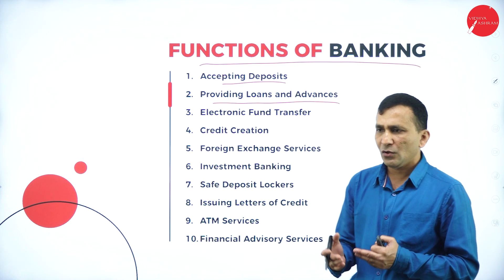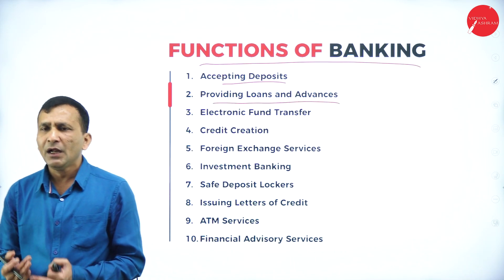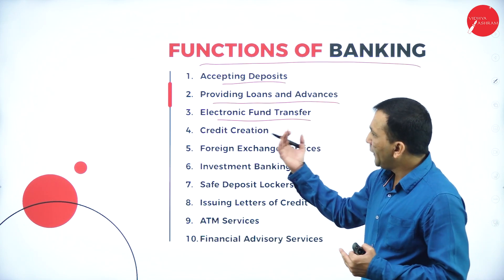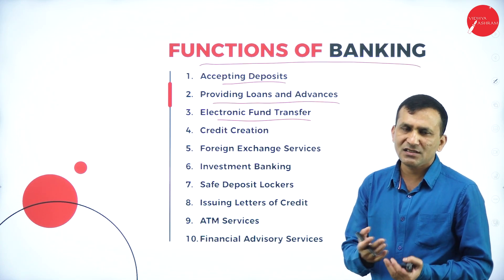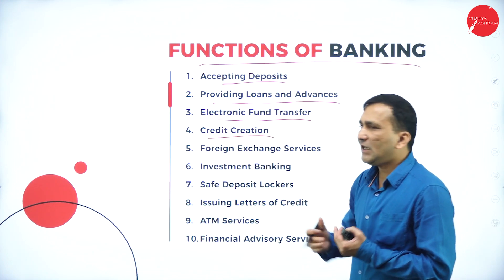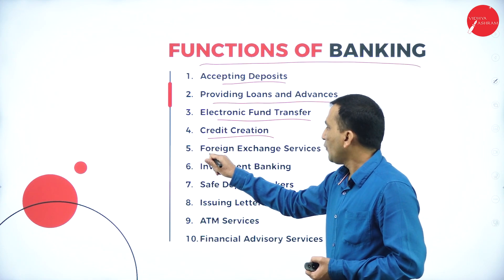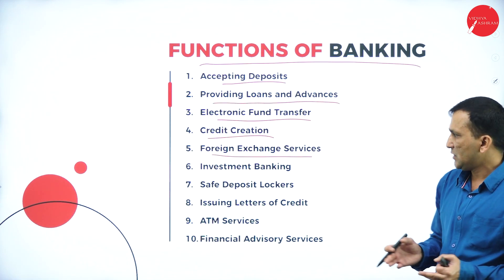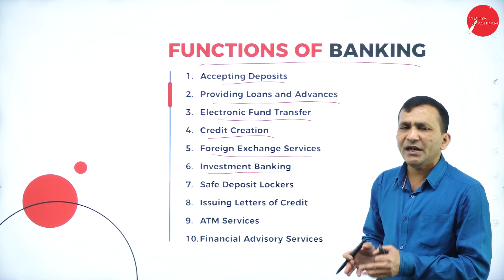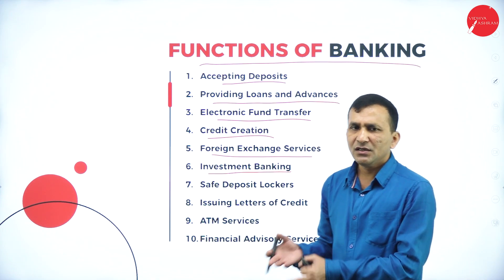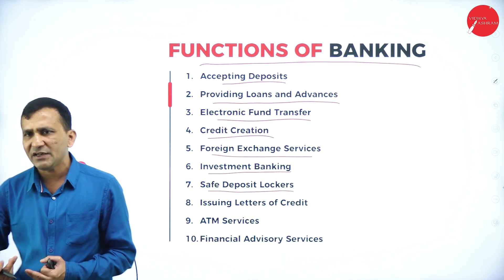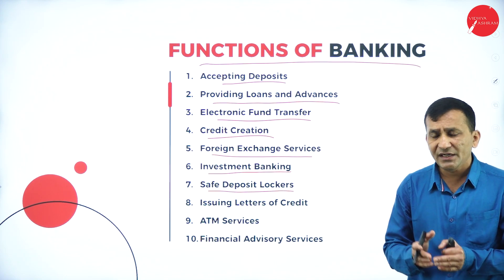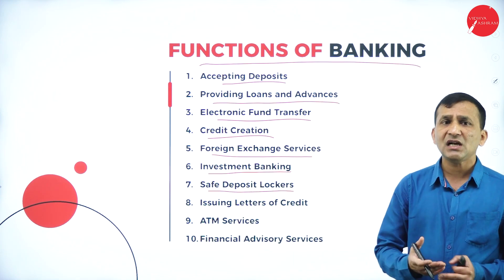The second function is providing loans and advances. Whatever deposits are accepted, loans of different types are provided. Current account holders have an extra limit called OD — overdraft. Third is electronic fund transfer — easily done through internet banking: NEFT, RTGS are available facilities. Fourth is credit creation. Fifth is foreign exchange service — when receiving any foreign currency, the bank can convert it into local currency. Sixth is investment banking — specializing in project or infrastructure investment. Seventh is safe deposit locker — banks provide lockers to keep valuable items, documents, or jewels, charging a fee for this facility.